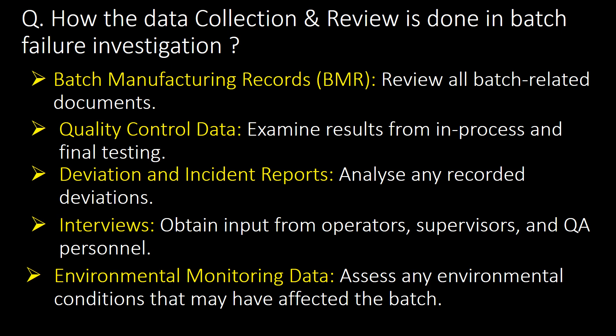How is data collection and review done in batch failure investigation? First, through batch manufacturing records (BMRs) — review all batch-related documents. Second, quality control data — examine results from in-process and final testing. Third, deviation and incident reports — analyze any recorded deviations. Fourth, interviews — obtain input from operators, supervisors, and QA personnel. Fifth, environmental monitoring data — assess any environmental conditions that may have affected the batch.